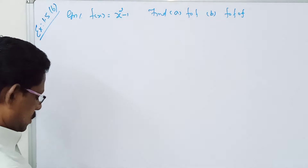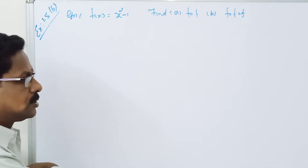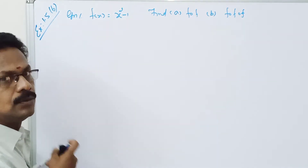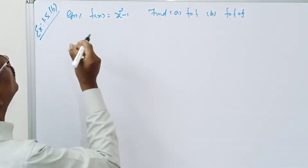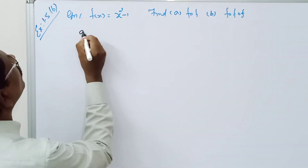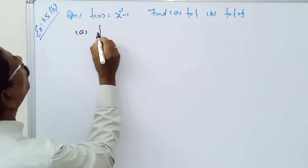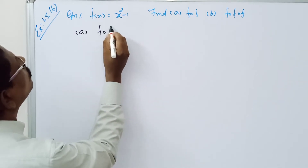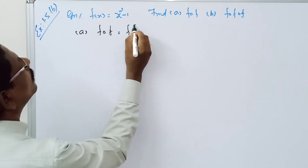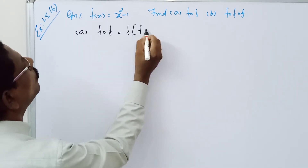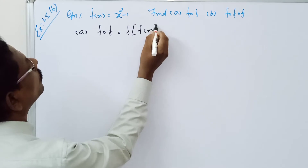So for the first part, f composition f. We have f composition f, which is f of f of x.